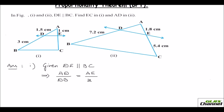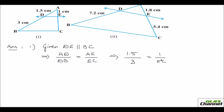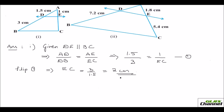Let us write the known values. AD is 1.5 cm, DB is 3, AE is 1, and EC is unknown. I can solve this by flipping the equation: EC equals 3 over 1.5, which equals 2 centimeters. So EC is 2 centimeters.